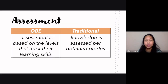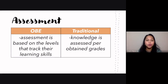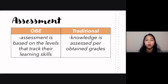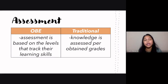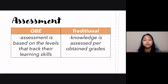Lastly, for their assessment: OBE is based on levels that track the learning skills of students. There is no failing student in OBE — if they have not reached the goals at a certain level, they review that level before moving to the next level of achievement. In traditional education, on the other hand, students' knowledge or skills are assessed and they are given grades.